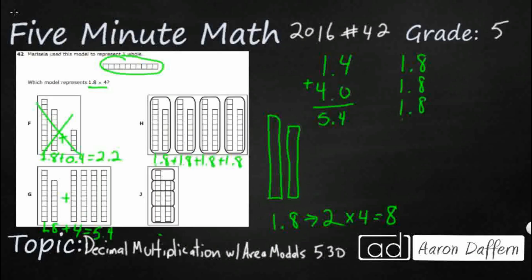Hopefully what you're seeing is when we're adding our 1.8s, you are seeing repeated addition. That's repeated addition. And another way to think of repeated addition would be 1.8 times 4. And so I'm thinking that H is really what we're looking for.